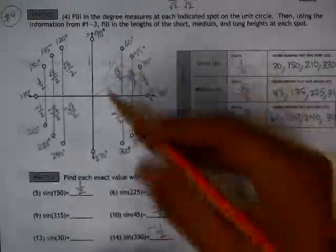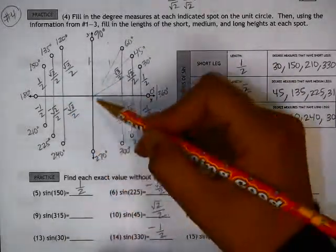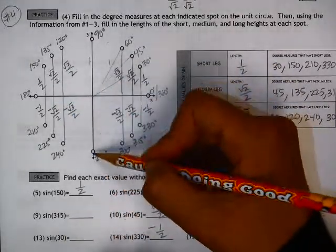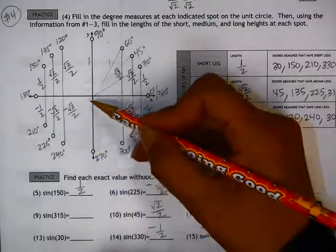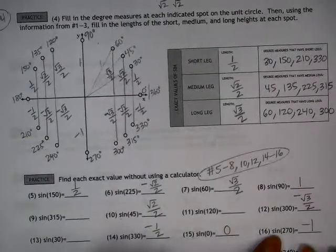16, sine of 270. So, going here, if we're finding the height or the distance from the x-axis, that's actually a negative, a negative 1. So, the sine of 270 is negative 1.